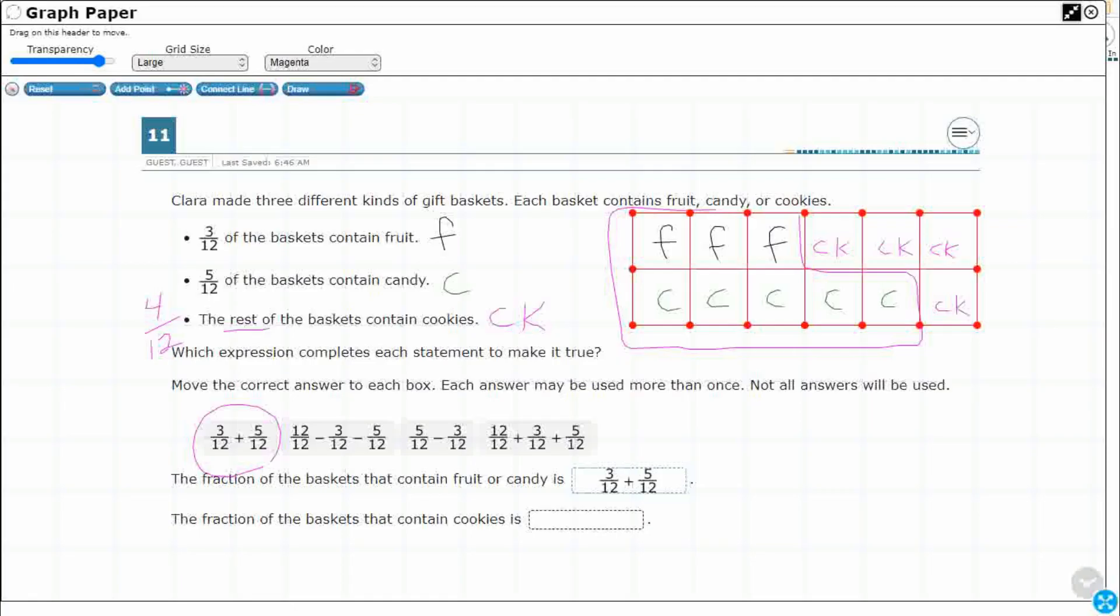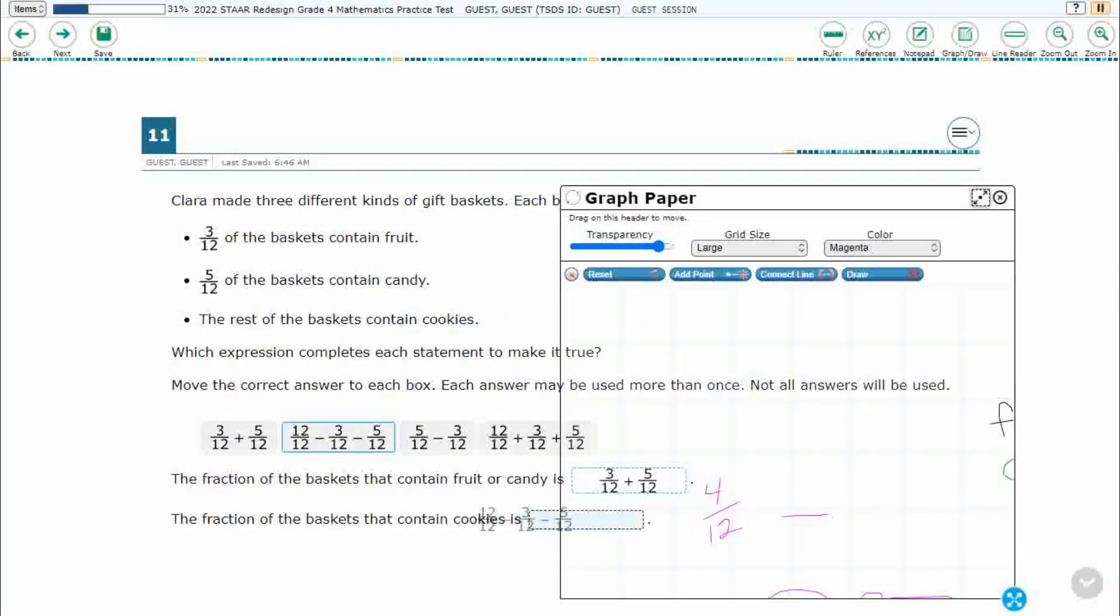The fraction of baskets that contain cookies - cookies is the leftovers. You can take your whole thing and subtract the two, the cookies and the candy and the fruit. So we're going to take this one right here and that's our answer.